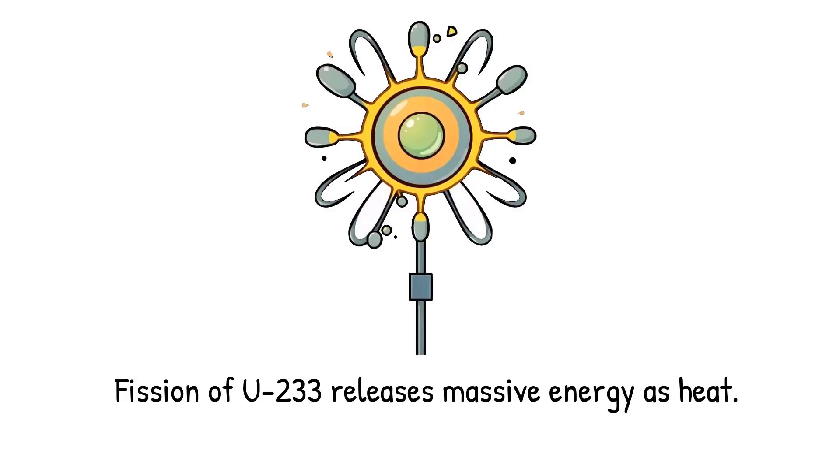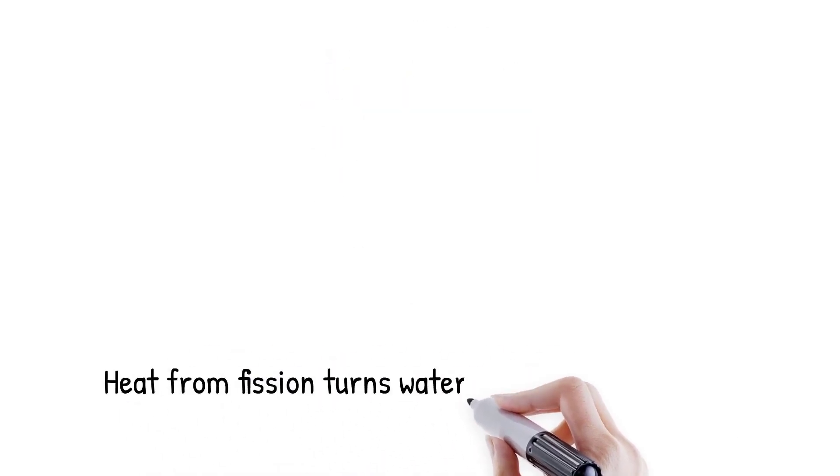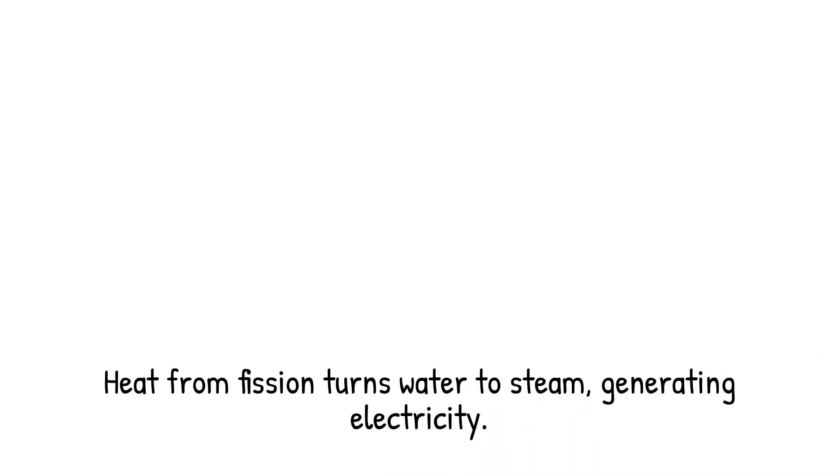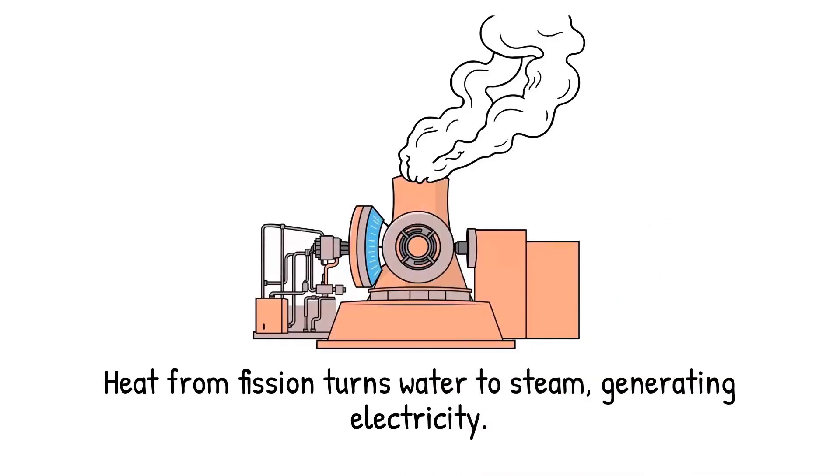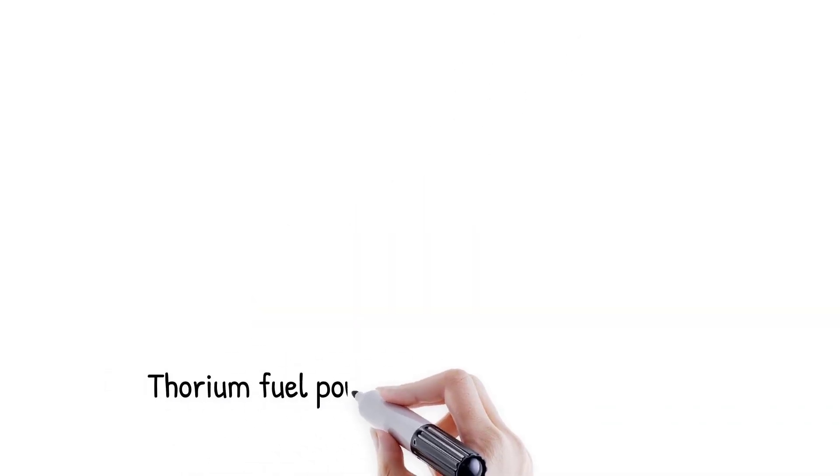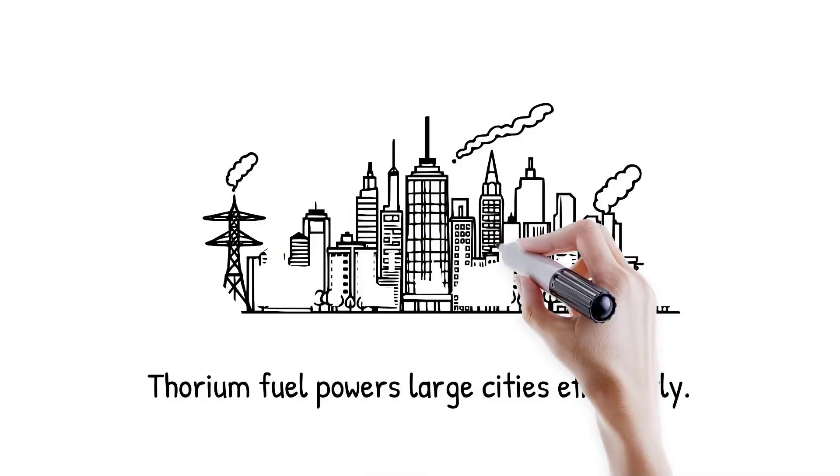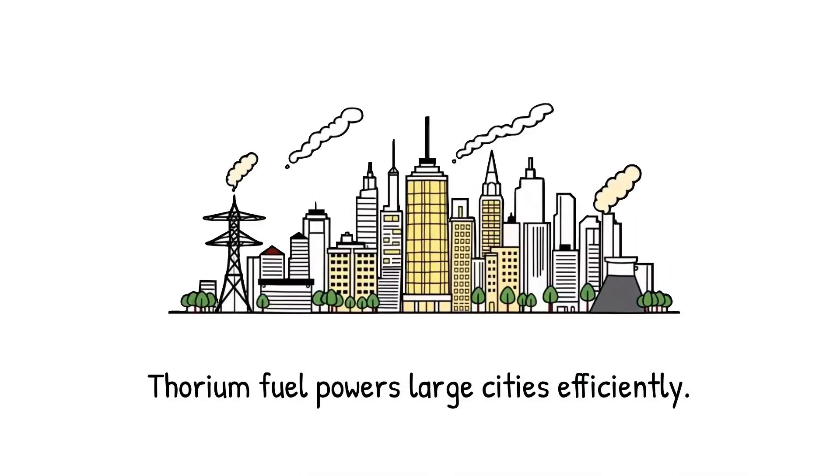When uranium-233 undergoes fission, it splits into smaller nuclei and releases about 200 million electron volts of energy per event. This energy comes primarily in the form of heat, which is transferred into coolant systems. The heat is then used to boil water into steam, which spins turbines to generate electricity. Compared to fossil fuels, nuclear fission provides millions of times more energy per kilogram of fuel. Thorium's conversion into U-233 allows it to take advantage of this dense energy release. This means that small amounts of thorium fuel can power large cities.